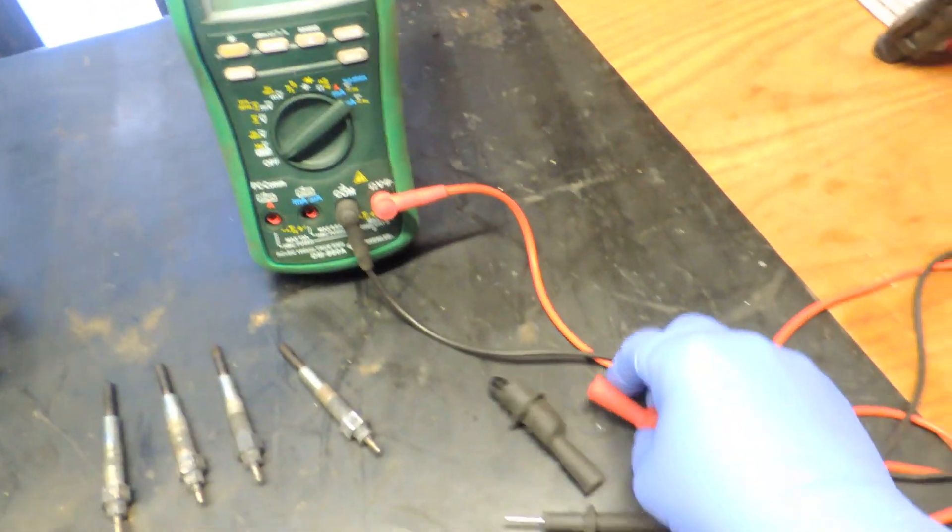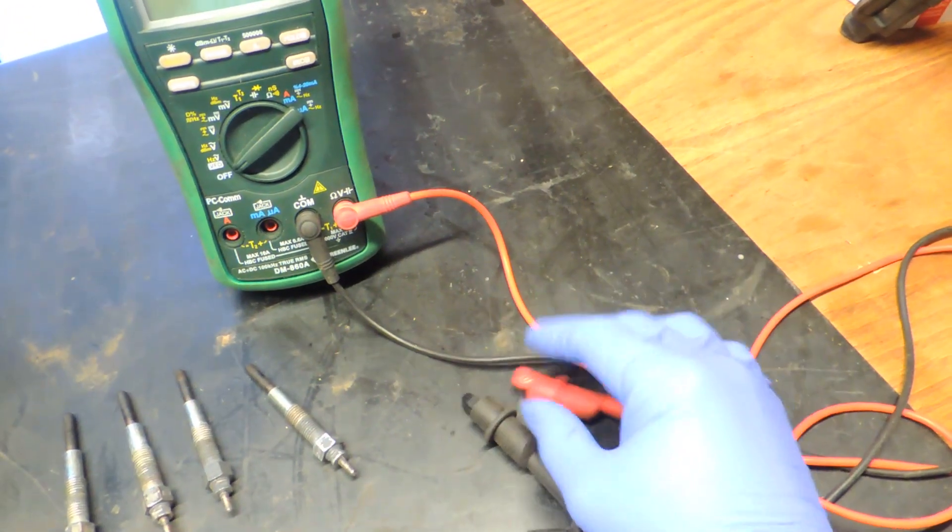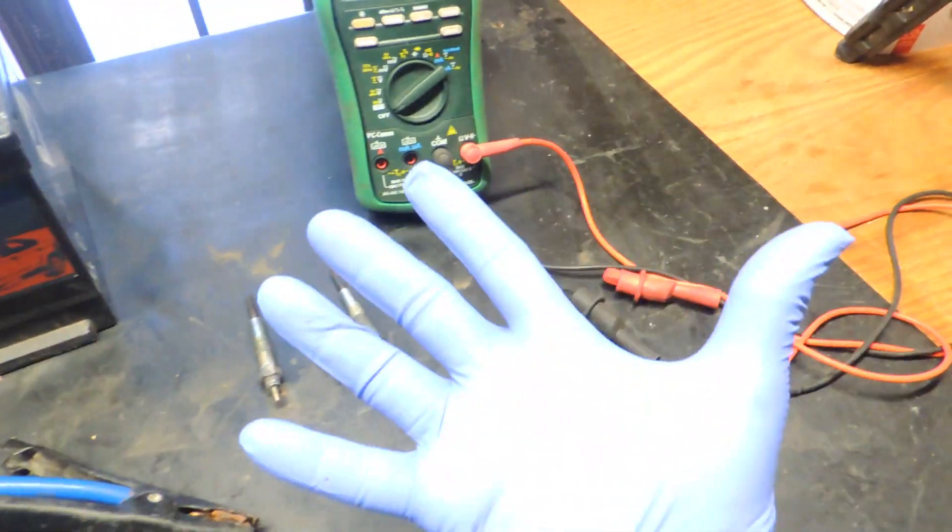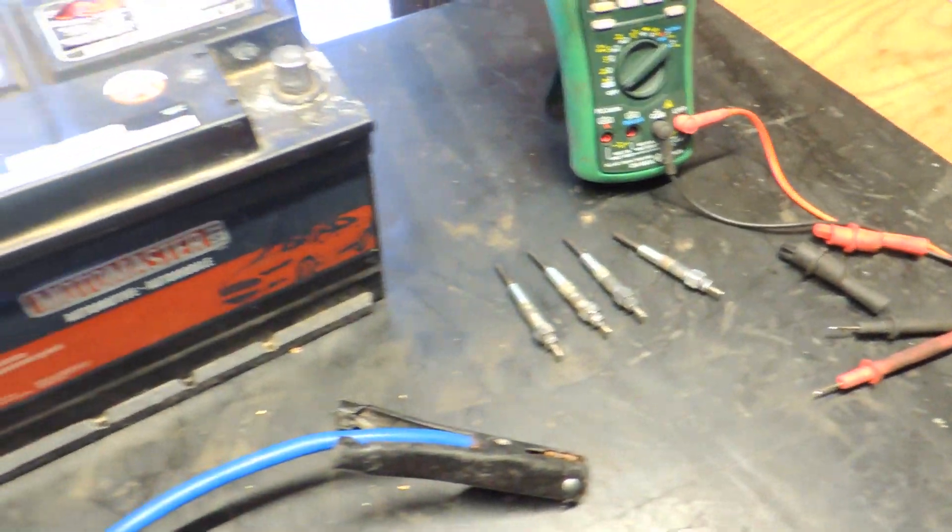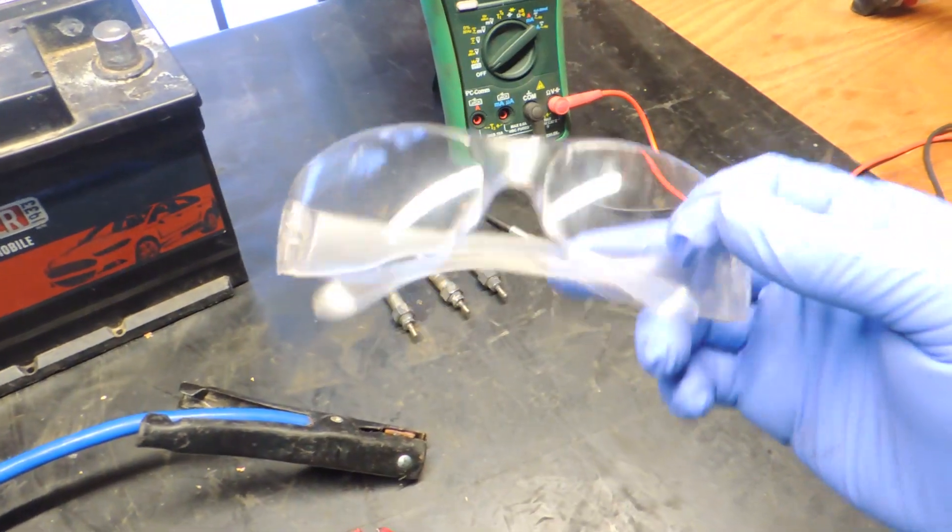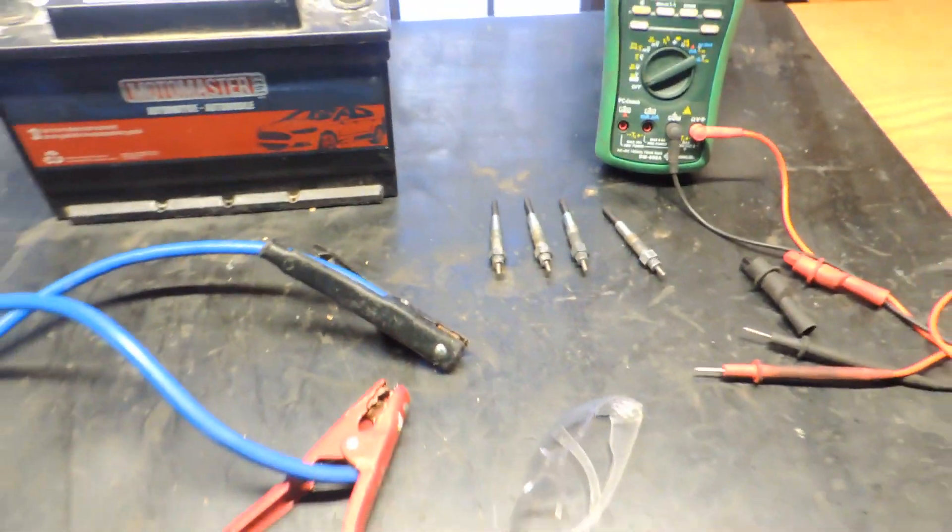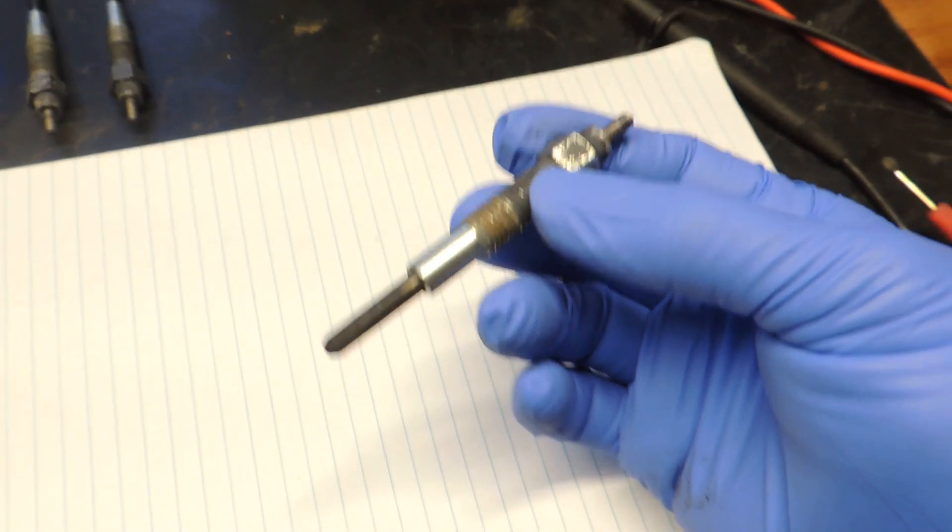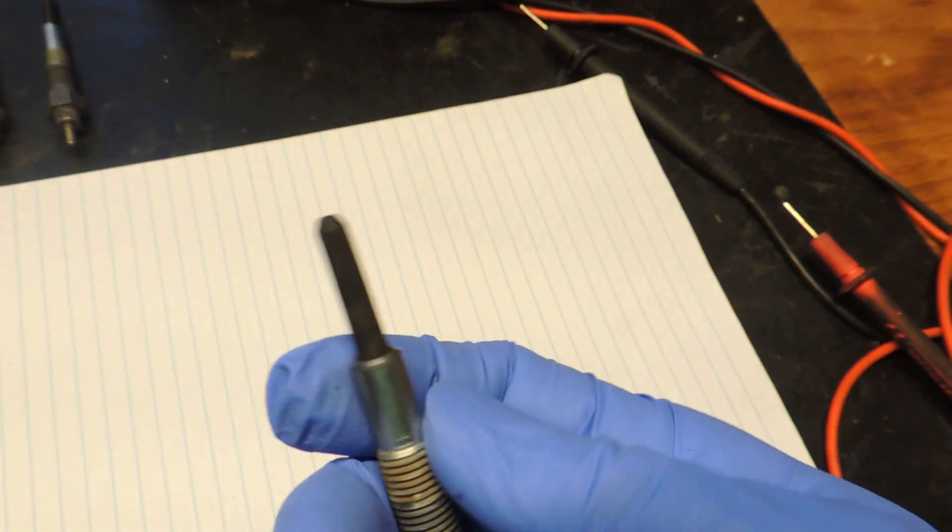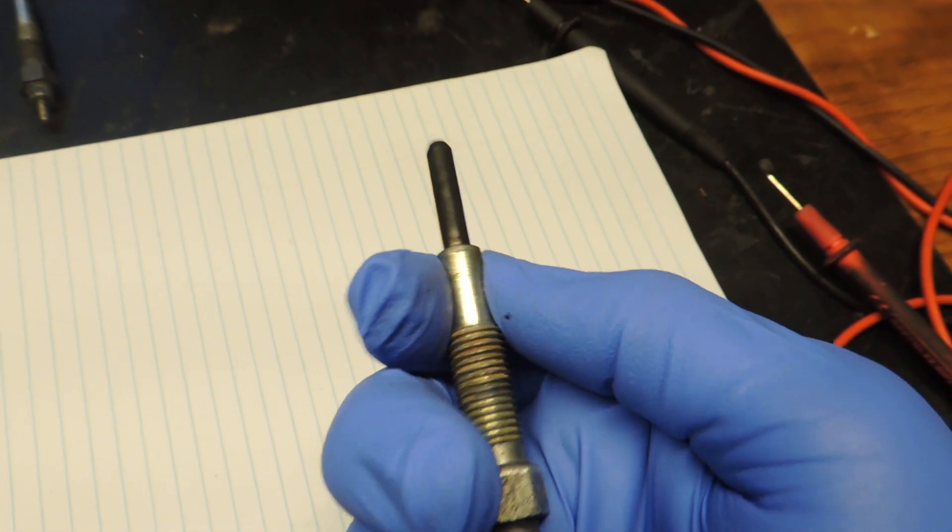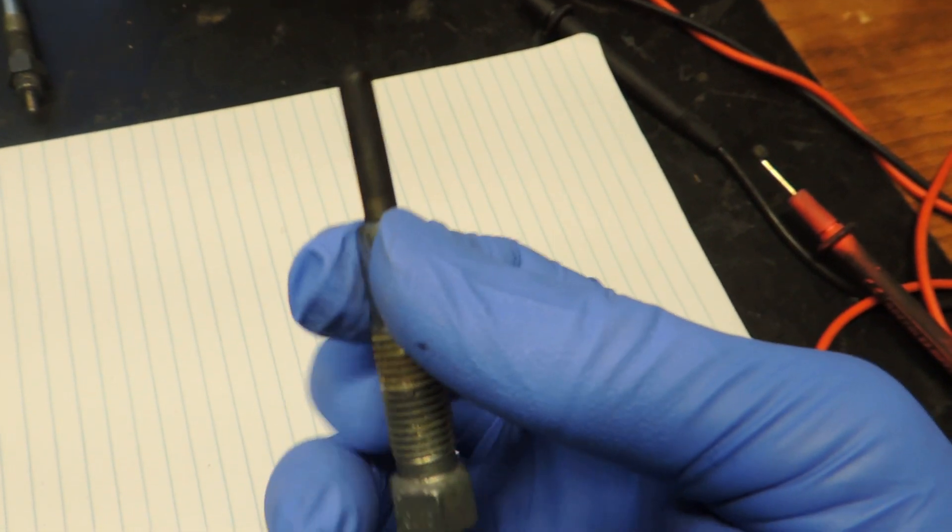If you have the alligator clips it's good, if not don't worry about it. That's pretty much it and the safety goggles. Before we begin check the overall condition of the glow plug, check the ceramic heating element, make sure it's not broken, no cracks.